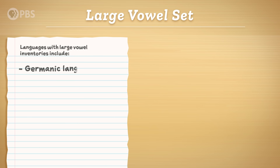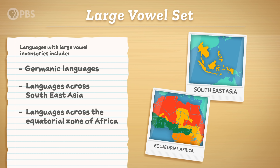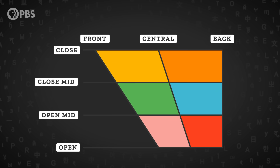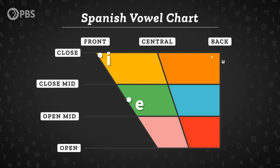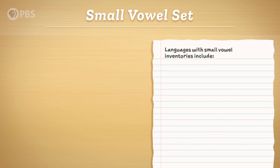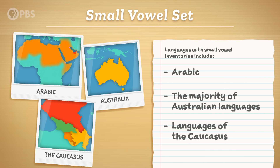Other languages with large vowel inventories include other Germanic languages, languages across Southeast Asia, and languages from several families across the equatorial zone of Africa, like Niger-Congo, Nilo-Saharan, and Afro-Asiatic. Many languages have inventories with around five or six vowels — this appears to be the middle ground for vowel systems. One example is Spanish, which has the vowels E, A, U, O, and A. Because this five-vowel system is so common, the IPA uses the basic Latin vowel symbols for these sounds and reserves the fancier symbols for rarer sounds. At the other end of the spectrum, there are languages that get along fine with a much smaller vowel inventory, including Arabic, the majority of Australian languages, and languages of the Caucasus. Languages with smaller vowel sets tend to have much more complex consonant inventories, so things balance out.